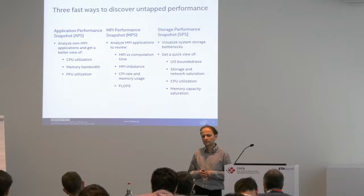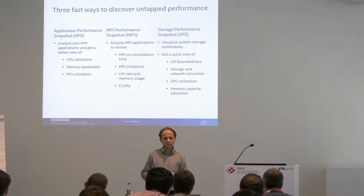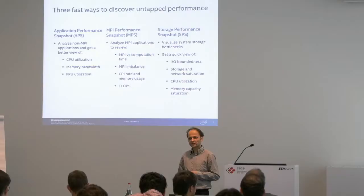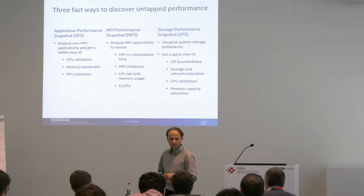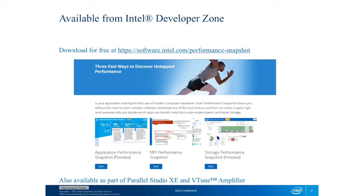The application performance snapshot is perhaps mostly an intranode exploration. It gives you CPU utilization, some memory bandwidth, and some floating-point metrics that are monitored — only these three aspects. For the MPI performance snapshot you would look at imbalance and high-level things like CPI rate, memory usage, and flops. The storage performance snapshot gives you an idea of IO boundness and the storage and network saturation, along with CPU utilization numbers.